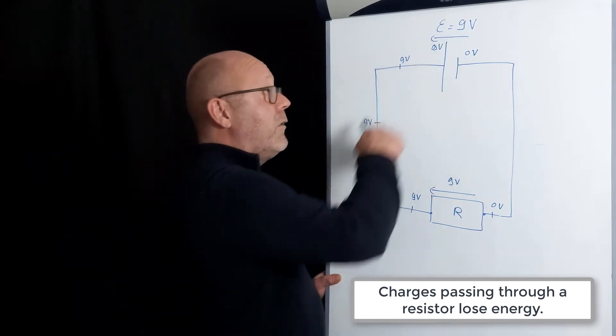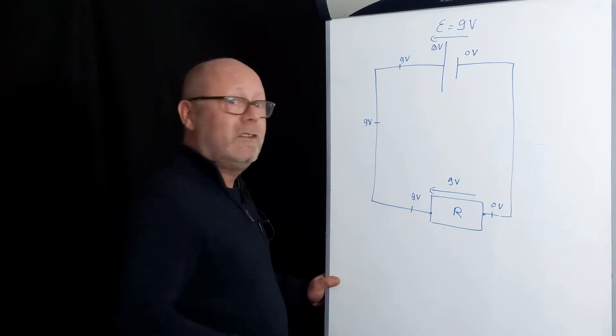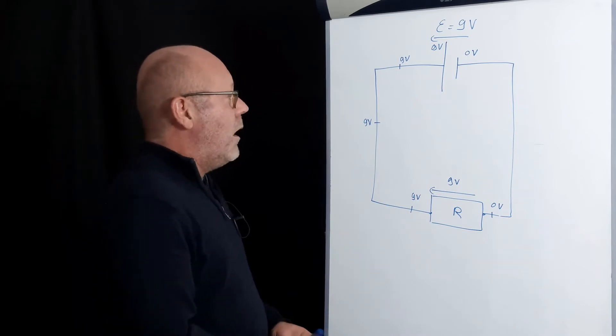0 minus 9 is minus 9. So it's 9V, but with the arrow on the other side to show that you're losing the energy. So basically the battery is giving 9J for every coulomb that passes through it, and the resistor loses 9J for every coulomb that passes through it. Conservation of energy.